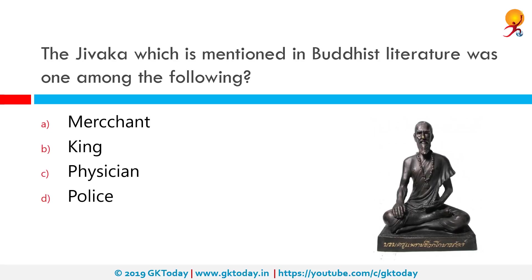Jivaka, which is mentioned in Buddhist literature, was one among the following — which one was it? Jivaka means physician. Jivaka is the name of a doctor during the Buddha's time.